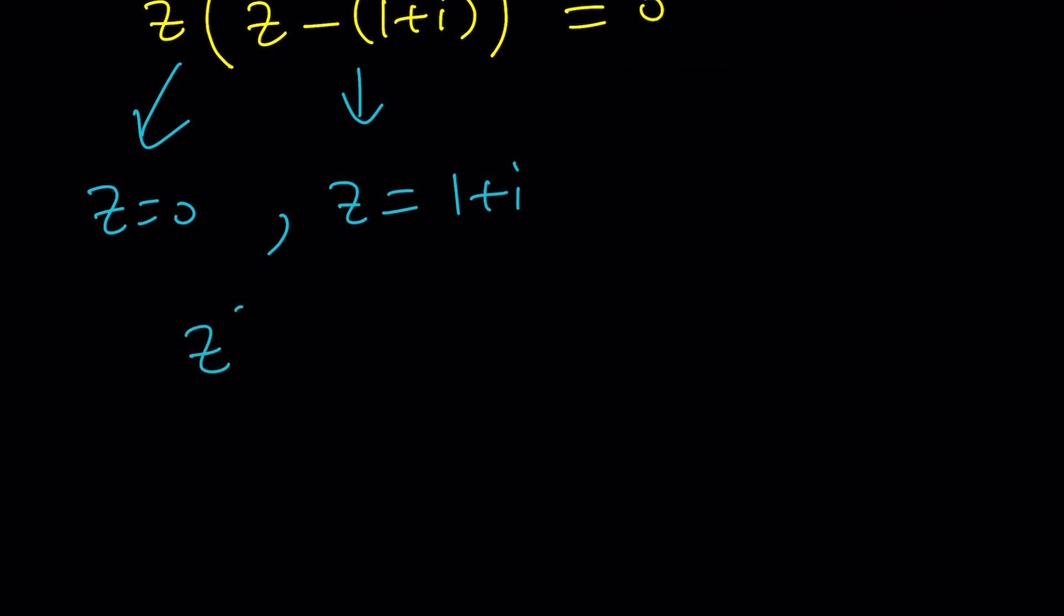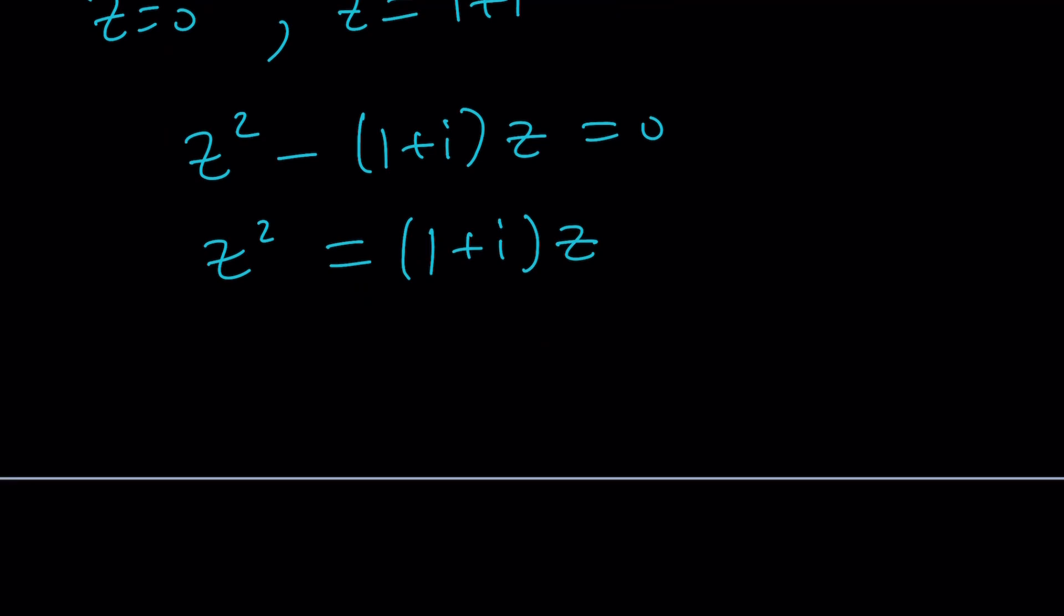Another way to approach it is we can kind of put this on the right-hand side and then consider the following. First of all, notice that we have z on both sides. So z equals 0 is an obvious solution because if z is 0, 0 equals 0. Make sense? And then that's one of the solutions.